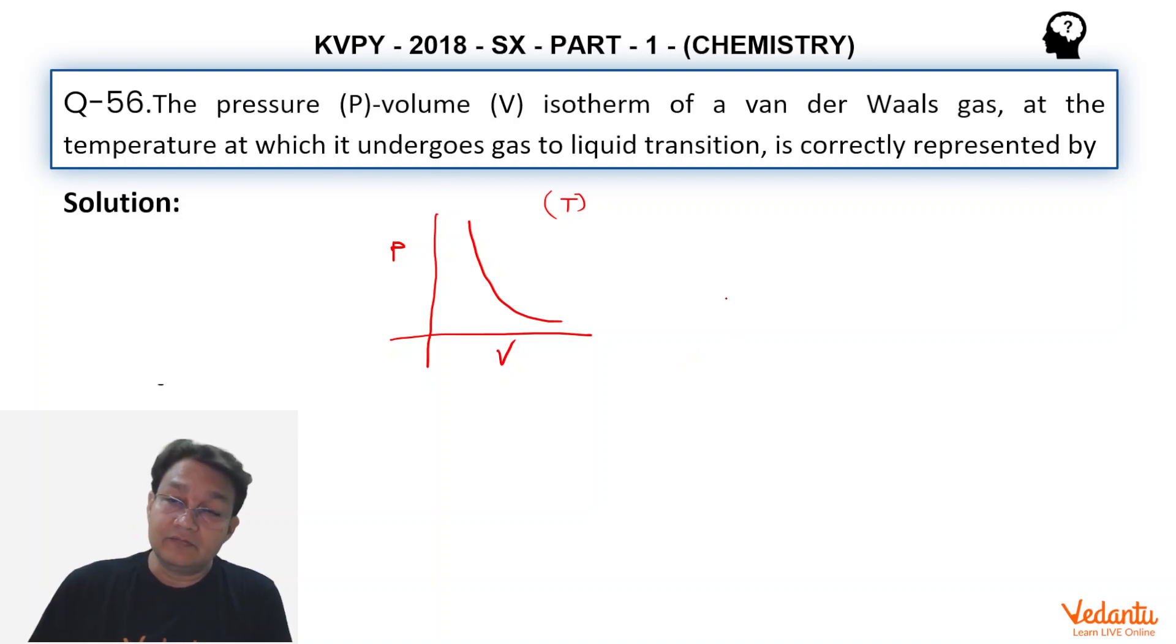But for a Van der Waals gas we know (P + A/V²)(V - B) = RT. So if we expand this it will become PV - PB + A/V - AB/V² = RT.